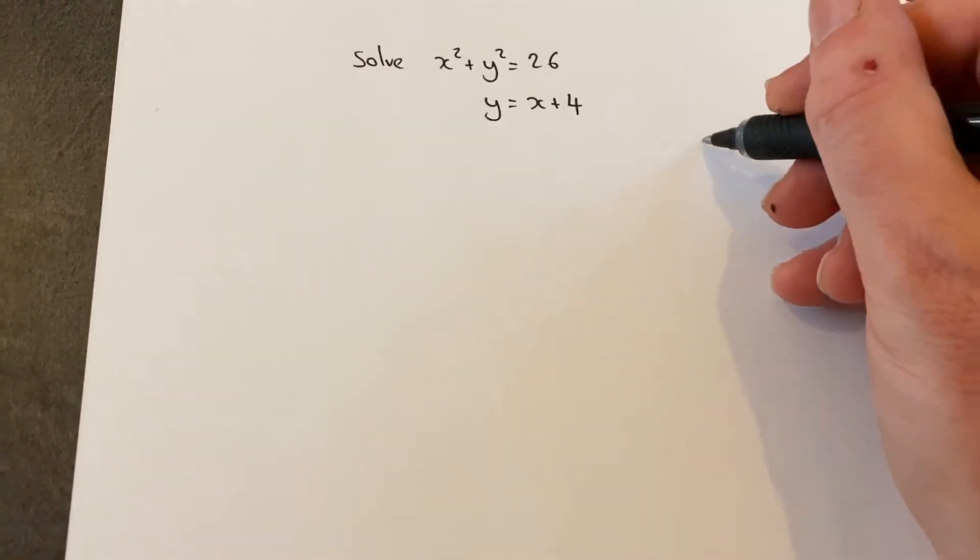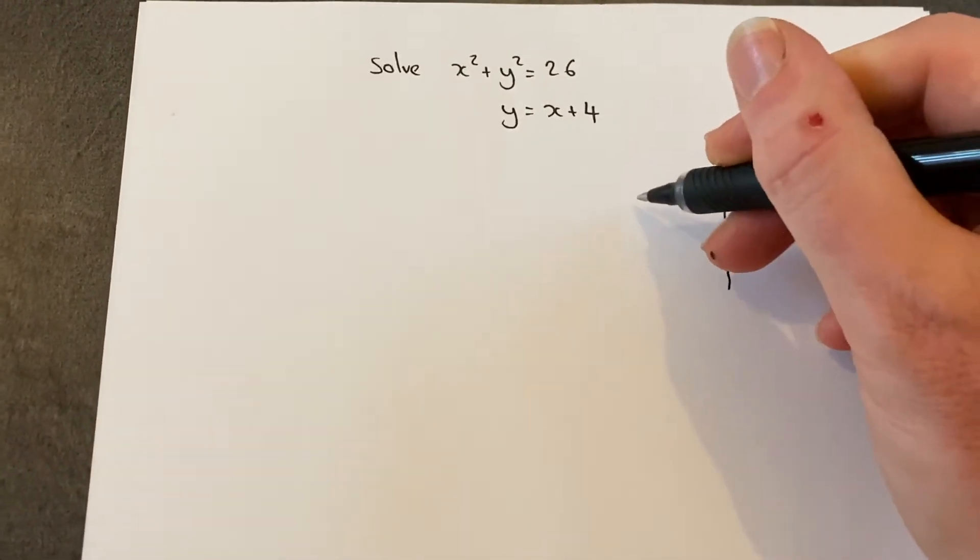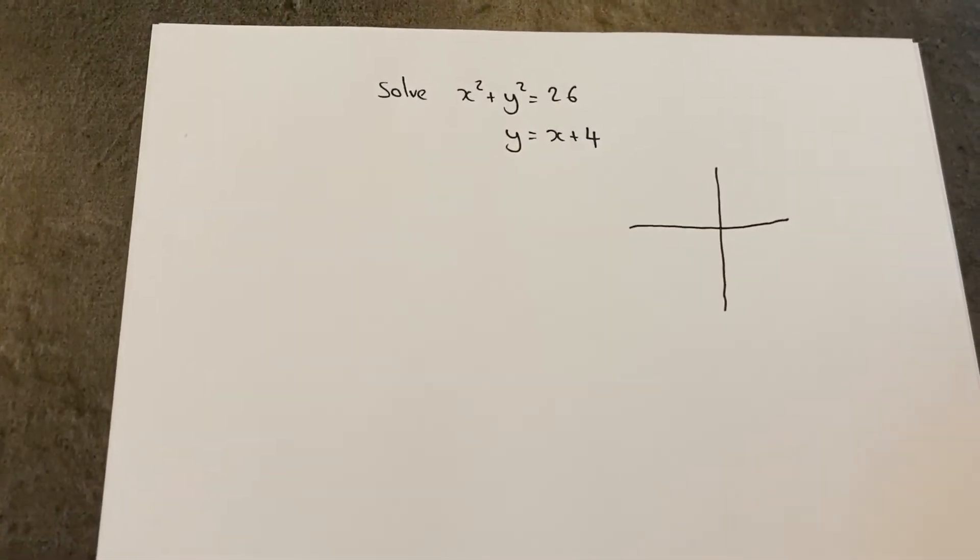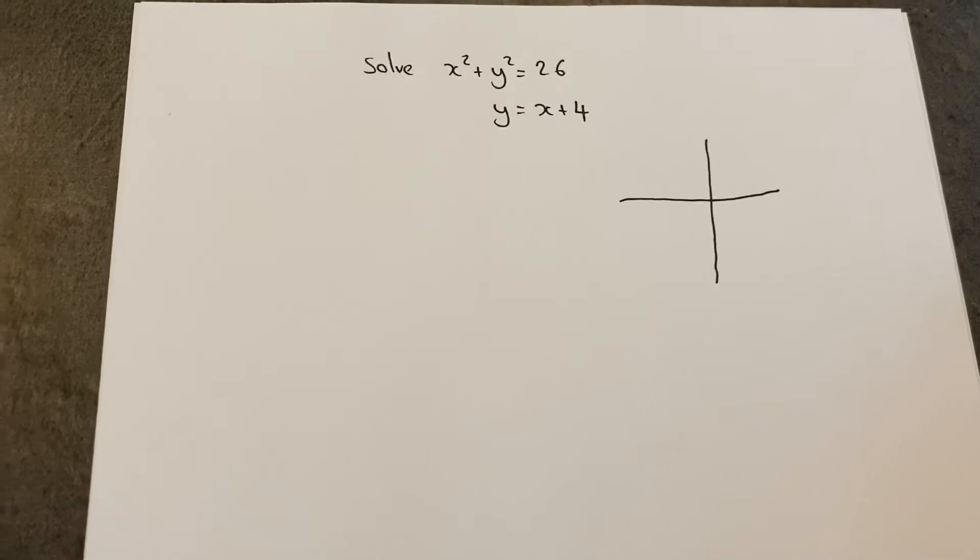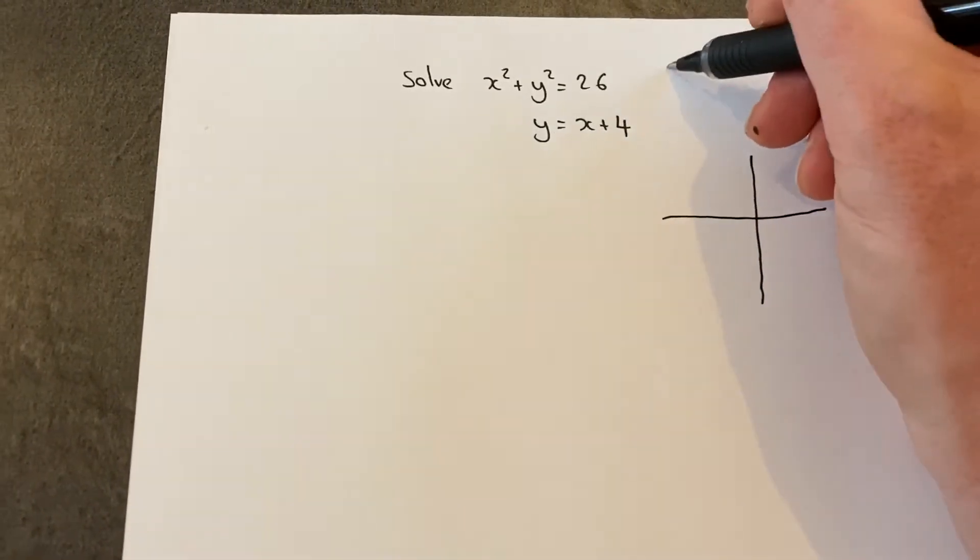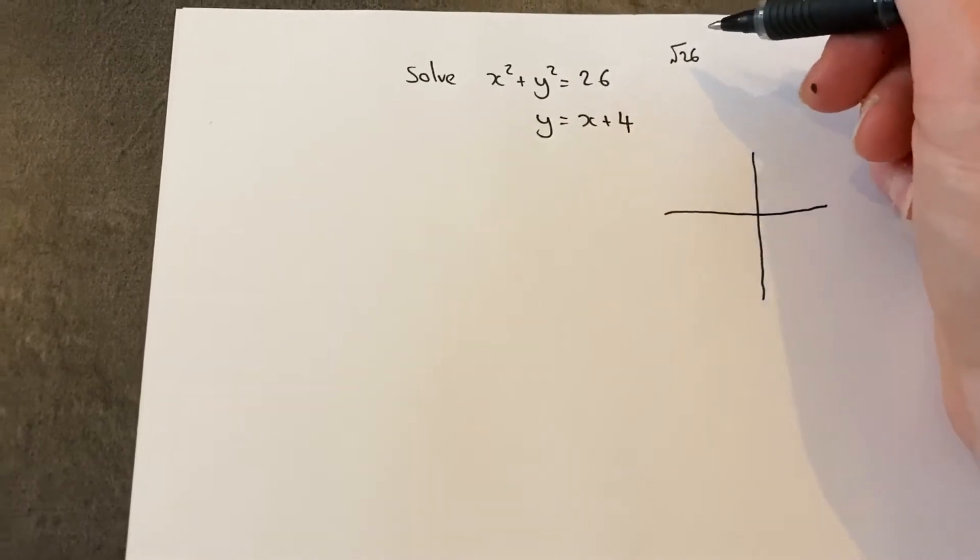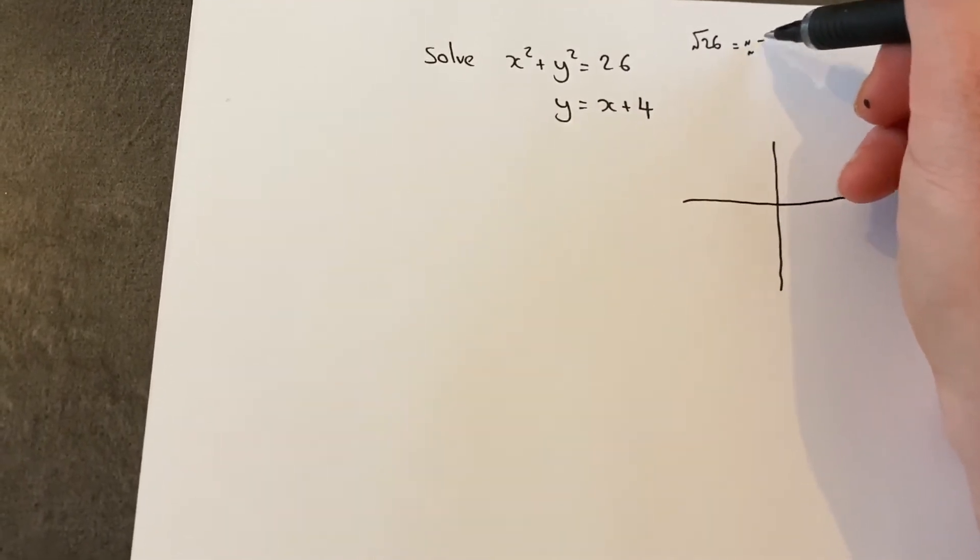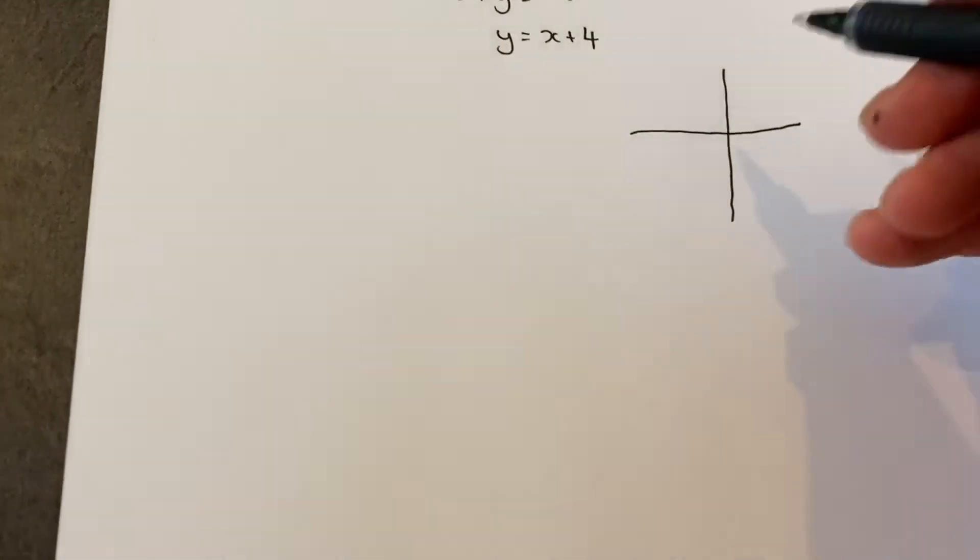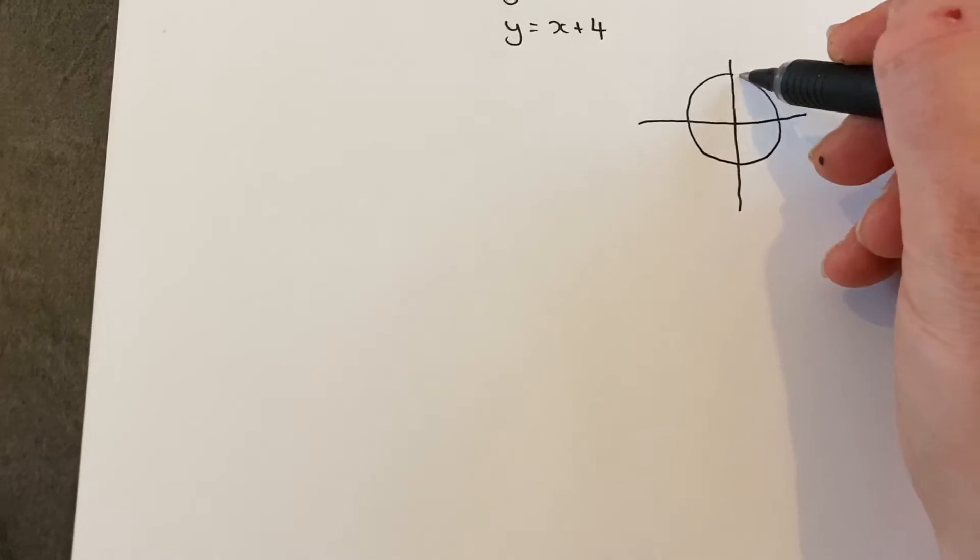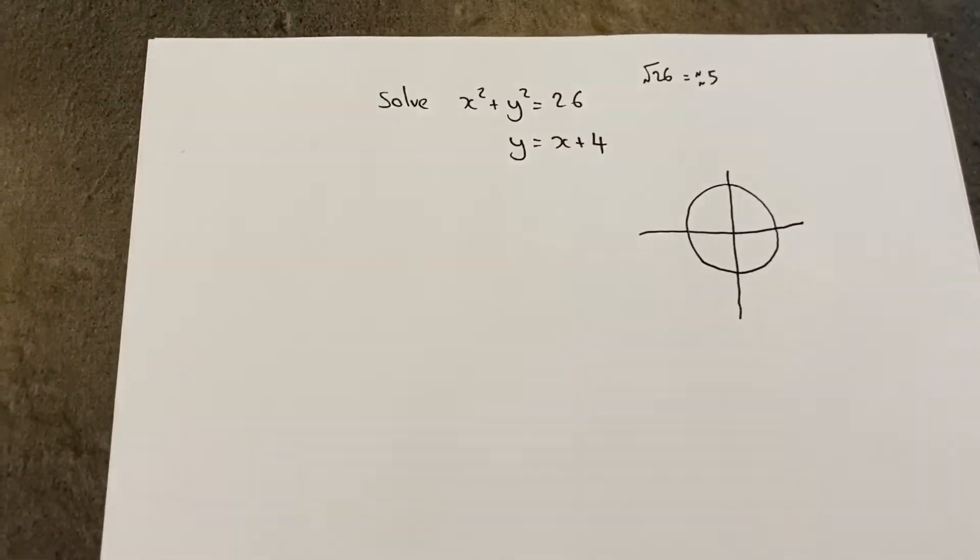To sketch the first graph, which is x squared plus y squared equals 26, it's a circle. To find its radius, we square root the end number, which is just over 5, approximately 5. If I imagine a circle here, it's passing through 5 on the x and y axis, or just over 5.